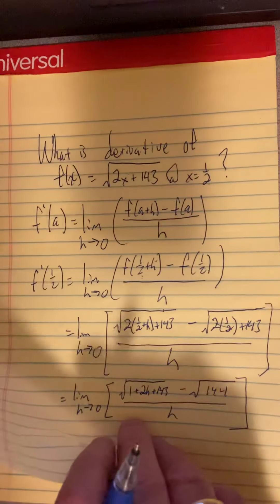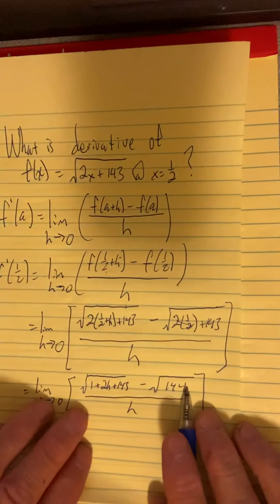Let's go to another sheet of paper and continue. So what we will do is remind ourselves what we have here is the limit as h goes to zero of the square root. Now remember, we have one plus 143. So that's two h plus 144. And then here we have the square root of 144. So I could leave it the square root of 144 or I could admit that that's 12. And then it's all over h.